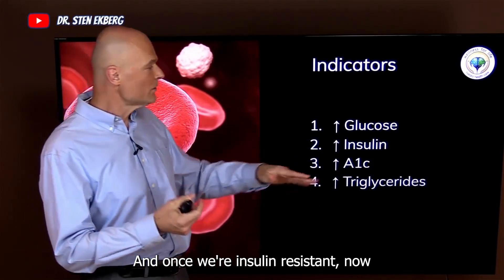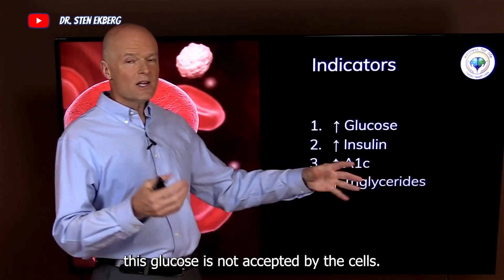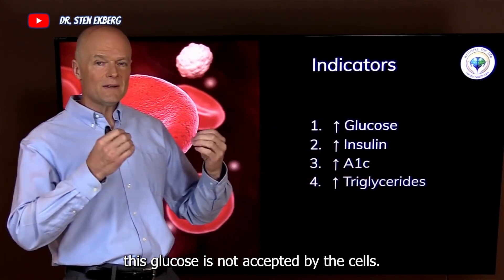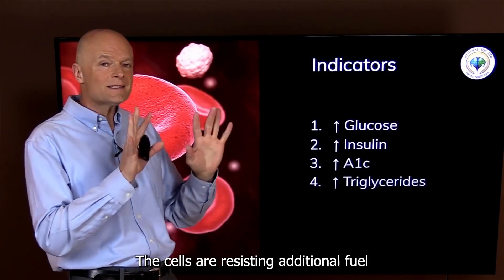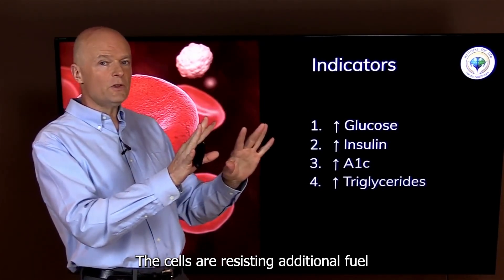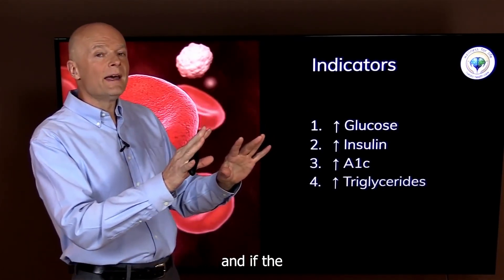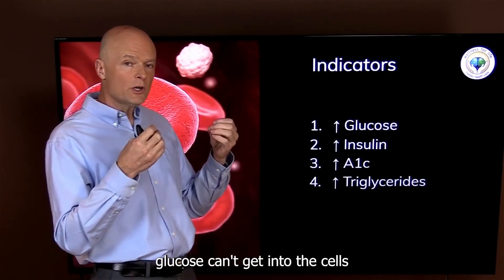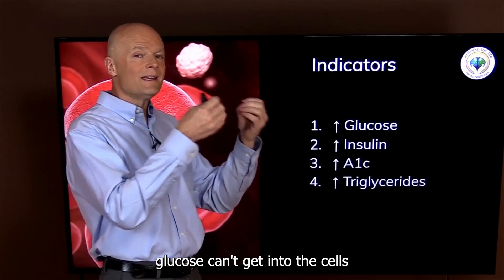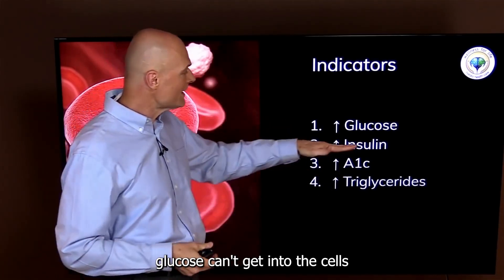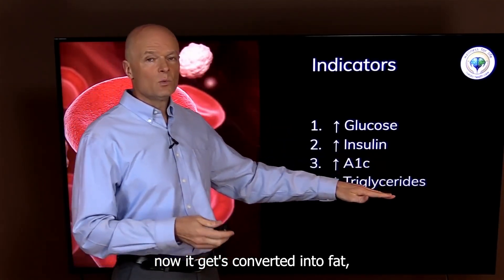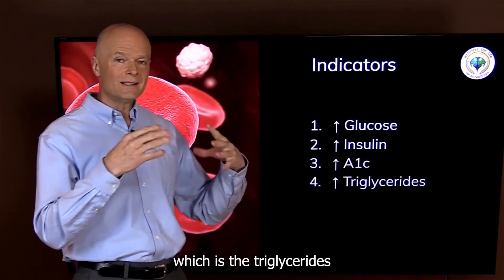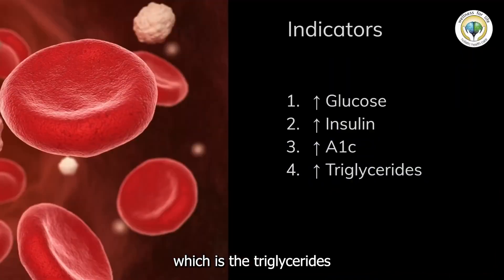And once we're insulin resistant, the glucose is not accepted by the cells — the cells are resisting additional fuel. If the glucose can't get into the cells, it gets converted into fat, which is the triglycerides that circulate in the blood.